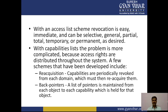With an access list scheme, revocation is easy — immediate and can be selective or general, partial or total, temporary or permanent, as desired. With a capabilities list, the problem is more complicated because access rights are distributed throughout the system. A few schemes have been deployed to handle this.